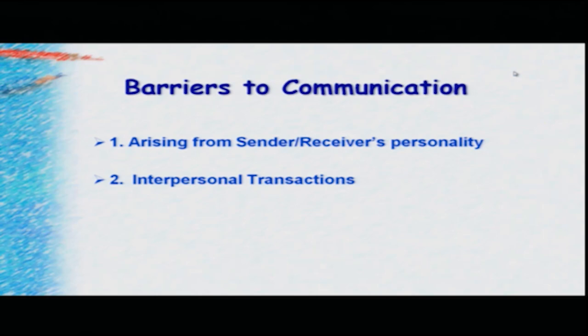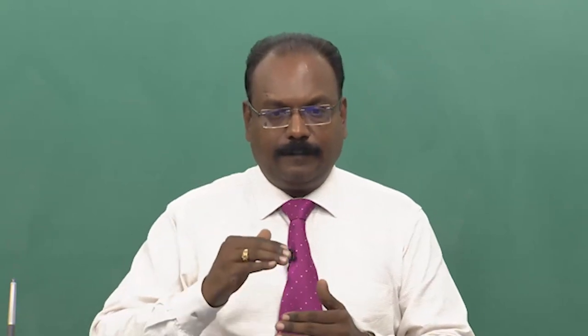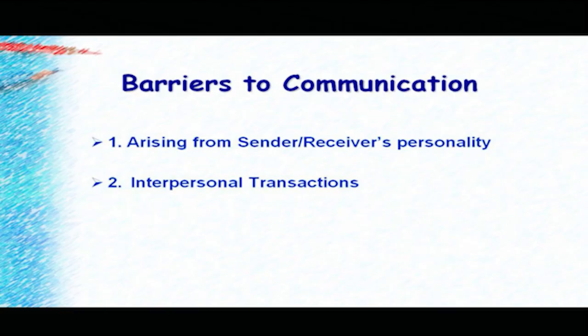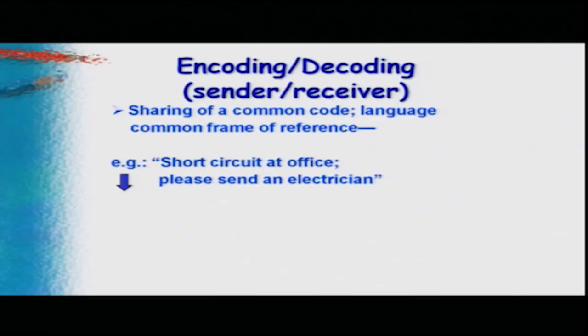In this lecture, we will focus on one of the two basic barriers — the first one arising from the sender or receiver's personality. In the next lecture, we will focus on interpersonal transactions. A barrier can arise even at the encoding-decoding level: if the sender and receiver do not share a common code, a common language, or a common frame of reference, then the meaning will not be understood and will not be interpreted correctly.